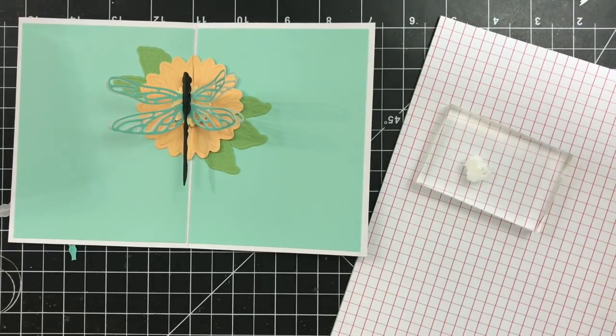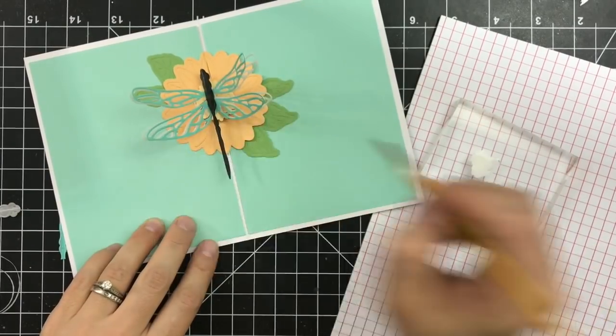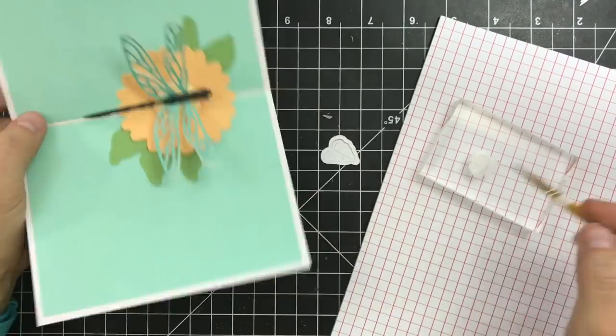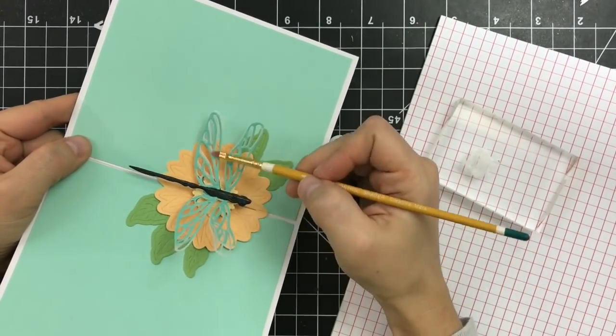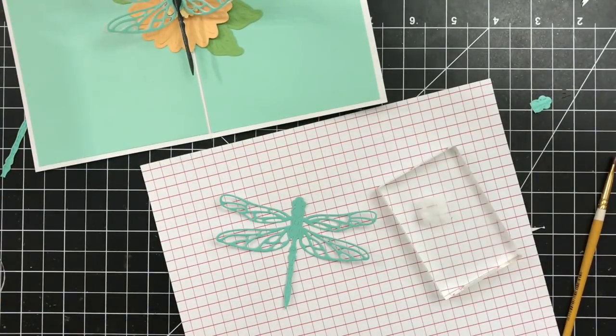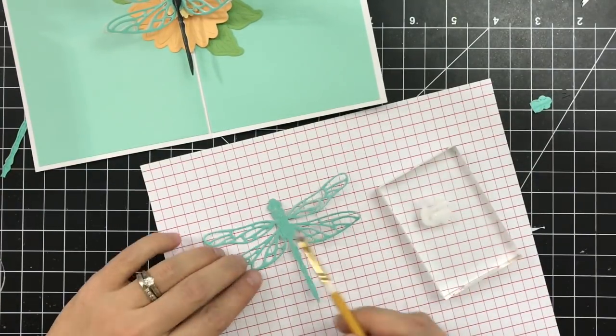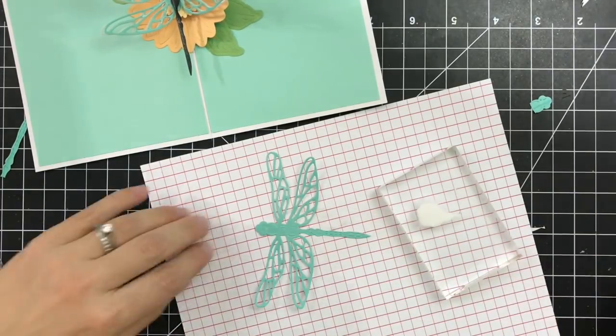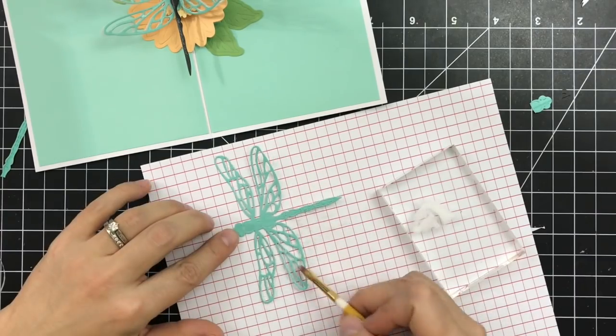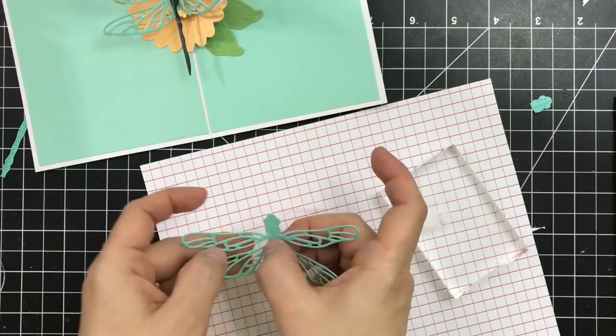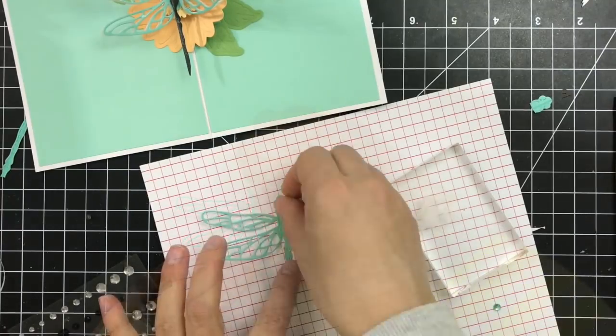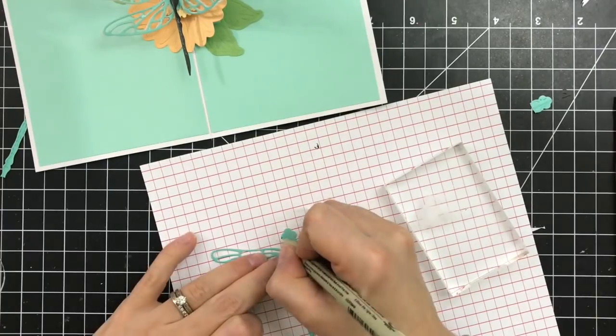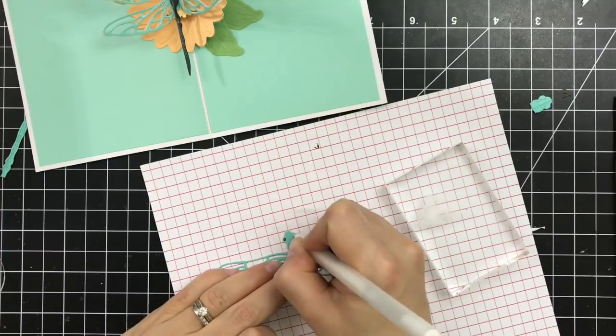I'm now adding some white iridescent shimmer spray. I just put a few drops on acrylic block and I'm using a paintbrush to color my dragonfly. I'm doing the same for the second dragonfly that will go on the front of the card. So I just left that pop-up open while everything dries, so we're not smooshing everything together.